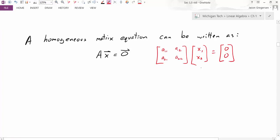So the question is, can I find x1, x2 to satisfy this equation? One solution immediately pops out. If x equals the 0 vector, then Ax equals 0. That's always true, no matter what the matrix A is. So that tells me there is always a solution to a homogeneous equation.